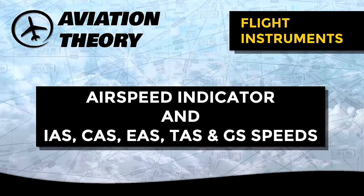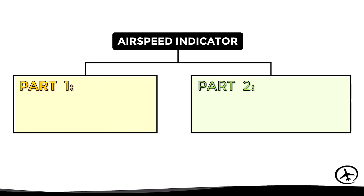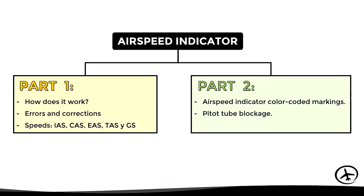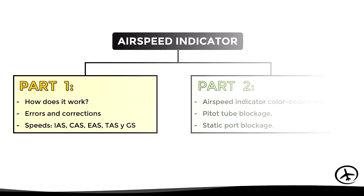Today we will talk about the operation of the airspeed indicator as well as the speeds used in aviation with their corresponding definitions. We will divide the airspeed indicator topic into two videos. In this first part we will focus on how an airspeed indicator works, what are the errors and corrections that must be applied, as well as the different definitions of the speeds used in aviation.